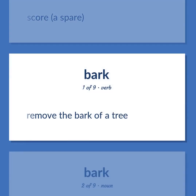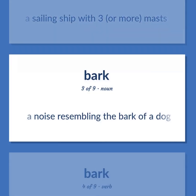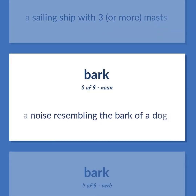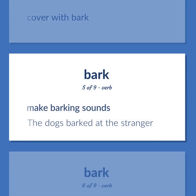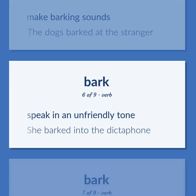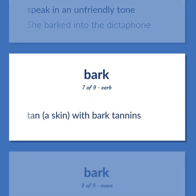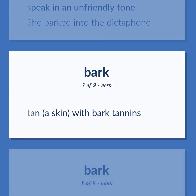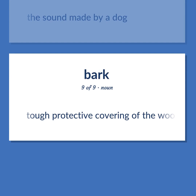Bark: Remove the bark of a tree. A sailing ship with three or more masts. A noise resembling the bark of a dog. Cover with bark. Make barking sounds — the dogs barked at the stranger. Speak in an unfriendly tone — she barked into the dictaphone. Tan a skin with bark tannins. The sound made by a dog. Tough protective covering of the woody stems and roots of trees and other woody plants.